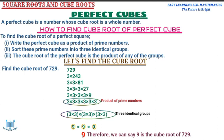Nine is the cube root of 729. That's basically how you find the cube root of a number. If you have questions, ask in the comment section — we'll be glad to respond. Please remember to subscribe and like our page. Thank you so much for watching. It has been Easy Learning Z Mathematics — the future is bright, see you in the next video, and God bless you.